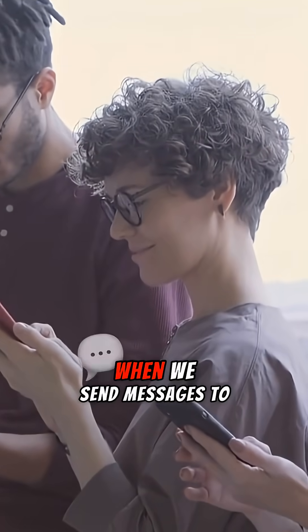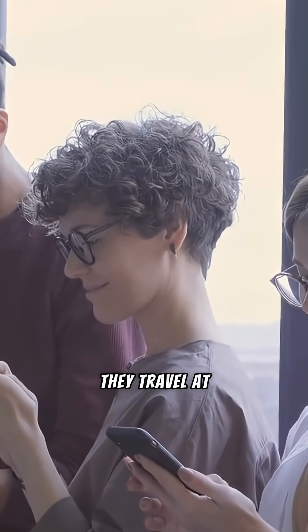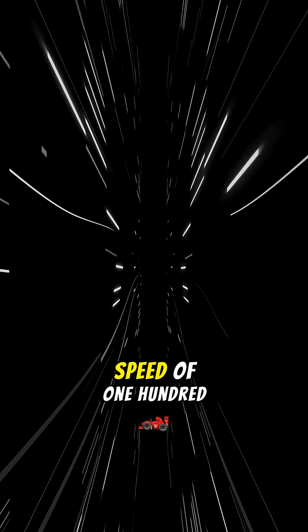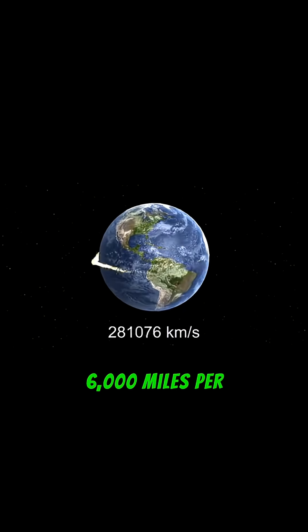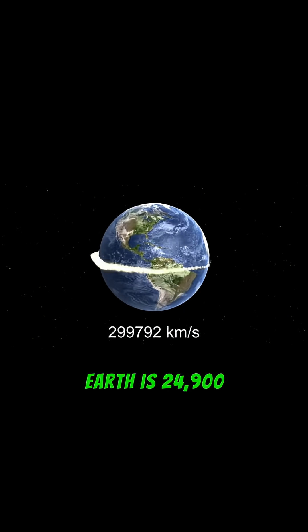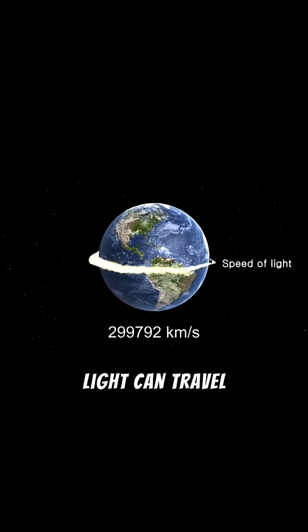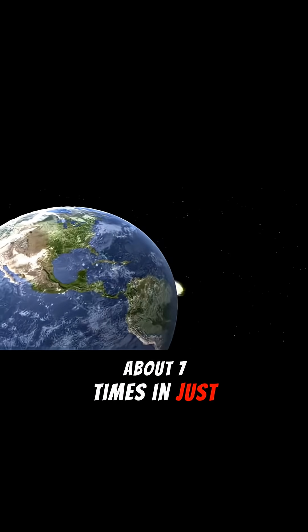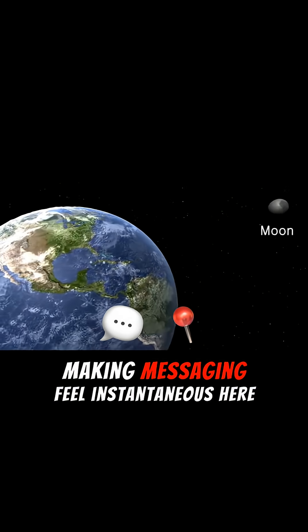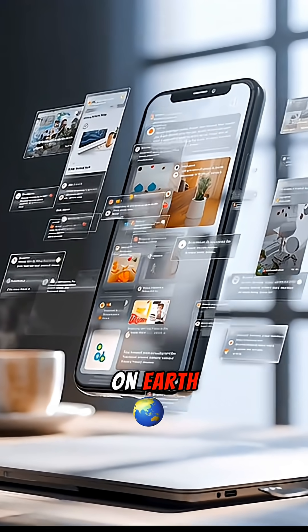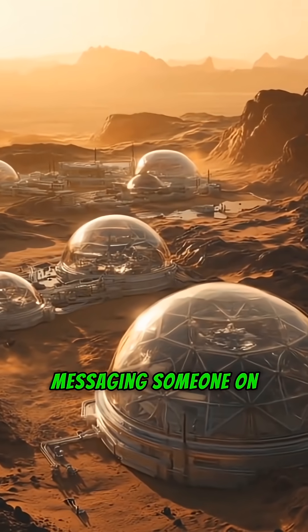For context, when we send messages to one another, they travel at the speed of light. Light travels at a speed of 186,000 miles per second, and the Earth is 24,900 miles in circumference. That means light can travel around the Earth about seven times in just one second, making messaging feel instantaneous here on Earth. This is not the case for messaging someone on Mars.